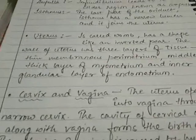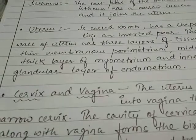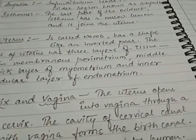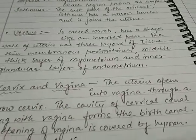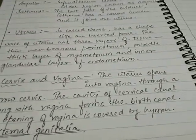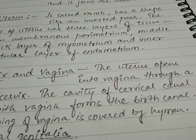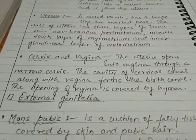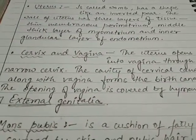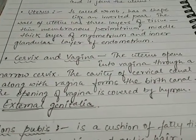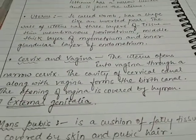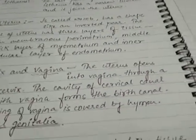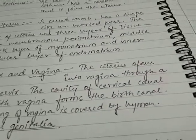Finally, we have the cervix and vagina — the last accessory ducts. The uterus opens into the vagina through a narrow cervix. The cavity of the cervix is known as the cervical canal, and this cervical canal along with the vagina forms the birth canal. The opening of the vagina is partially covered by a very thin membrane known as the hymen, which can be absent in many females.